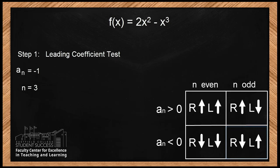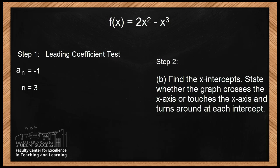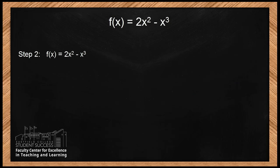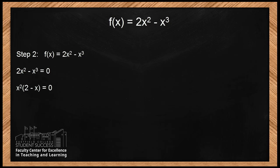Now let's look at Part B: find the x-intercepts, and state whether the graph crosses or touches the x-axis and turns around at each intercept. Remember, when finding x-intercepts, we always let f(x) = 0. Our function is 2x² - x³, set equal to 0. To solve this equation, we factor out the greatest common factor, which is x². Factoring out x², we have x²(2 - x) = 0.